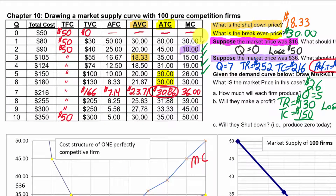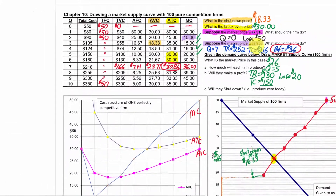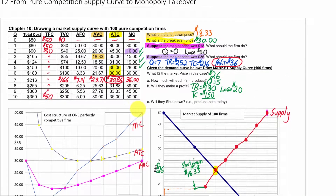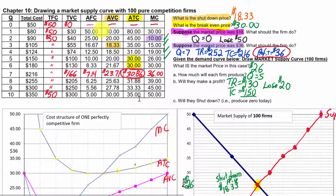What we're going to do here is revisit one of the cost tables that we looked at when we were talking about pure competition. We're going to start at the same place — a purely competitive market. This cost table represents what's happening with one firm, but there are a hundred small firms all producing exactly the same thing in this market. We filled out the cost table and graphed the marginal cost, average total cost, and average variable cost for one of these small firms. Then we answered questions about what these firms would do at different prices.